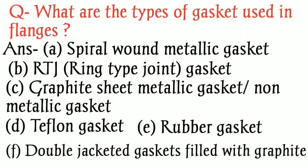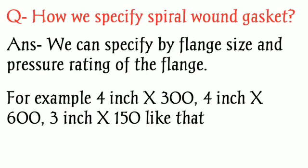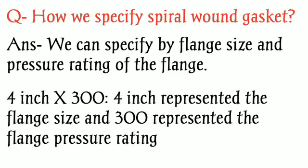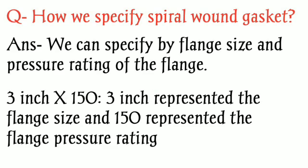The next question is: how do we specify a spiral wound gasket? We specify it by flange size and pressure rating. For example, 4-inch 300, 4-inch 600, or 3-inch 150. Here, the first number represents the flange size and the second number represents the flange pressure rating.